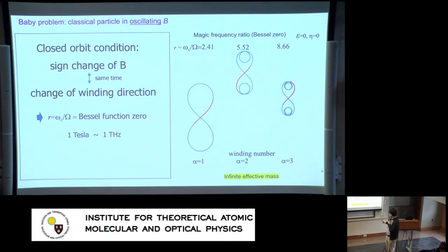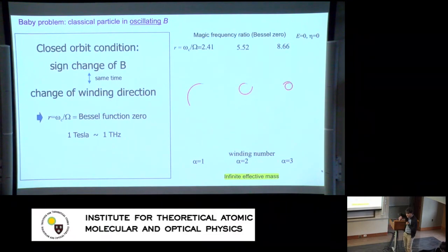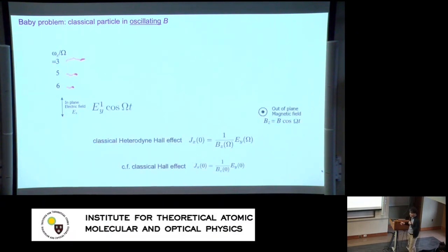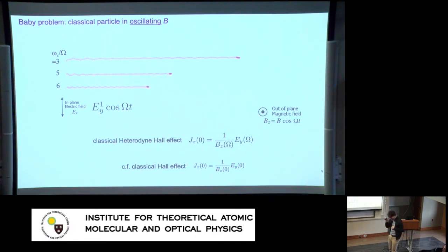An audience member asked: what do you mean by infinite effective mass here? If I add a DC electric field to this state, it will not move at all — just like cyclotron motion, it's completely localized. If we go to quantum mechanics, we'll find something similar. An audience member noted this effect is known in laser-produced plasmas and is called 'figure-8 motion,' but requires quiver velocity of order the speed of light to be observable. Thank you, I didn't know that.